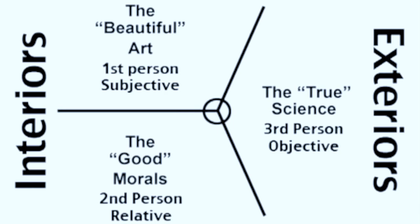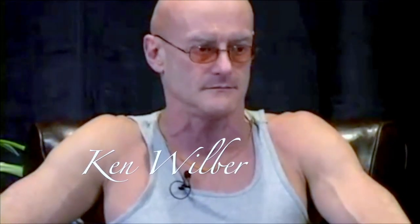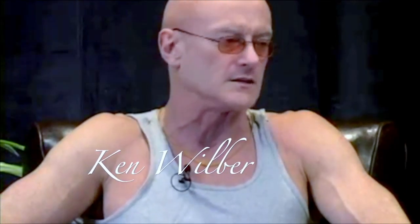And the three are I, we, and it, and the four are I, we, it, and its. Ninety percent of what you have to do is healthy translation. And a good definition of healthy translation is you give equal emphasis to all four quadrants at whatever level you're at. So you give an equal emphasis to I and to you and to it.